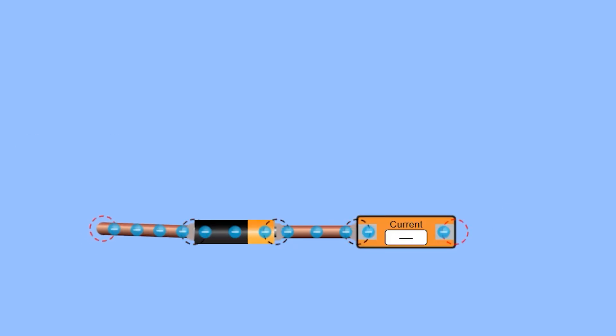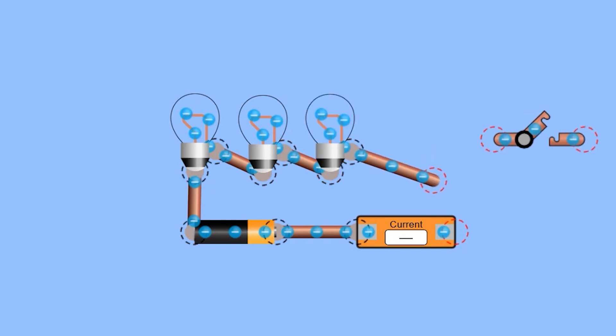In a series connection, circuit elements are lined up one after the other, so there's only one path for current to flow.